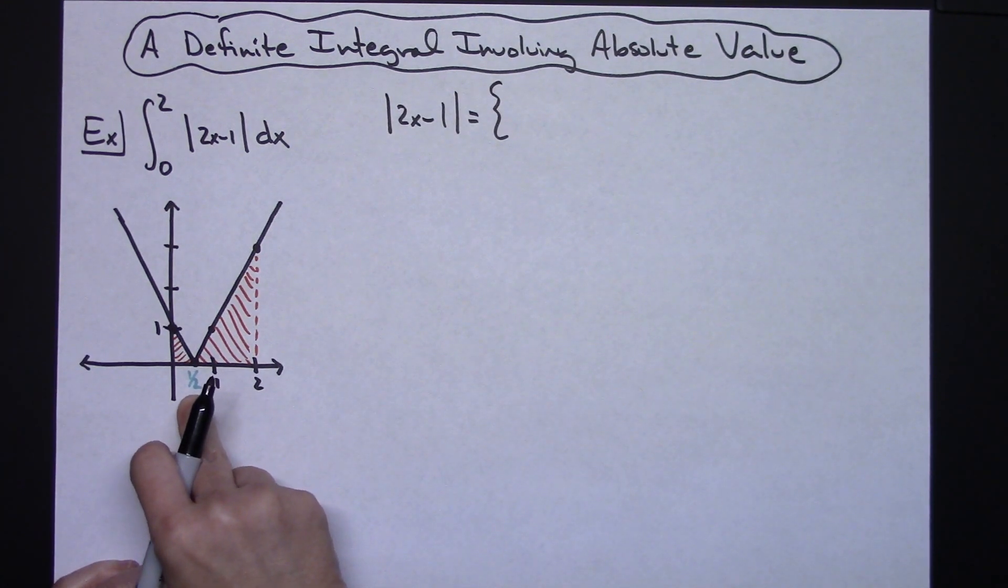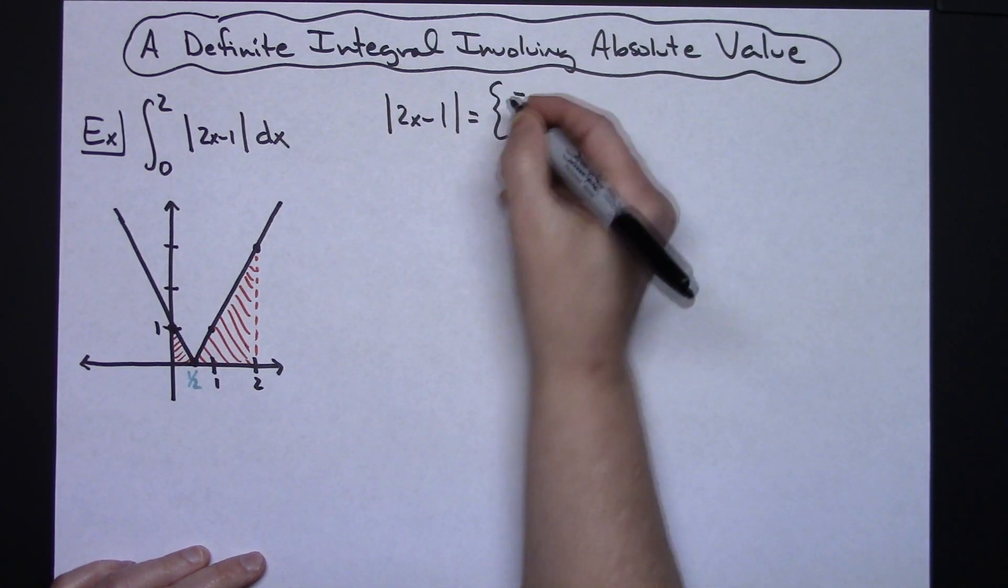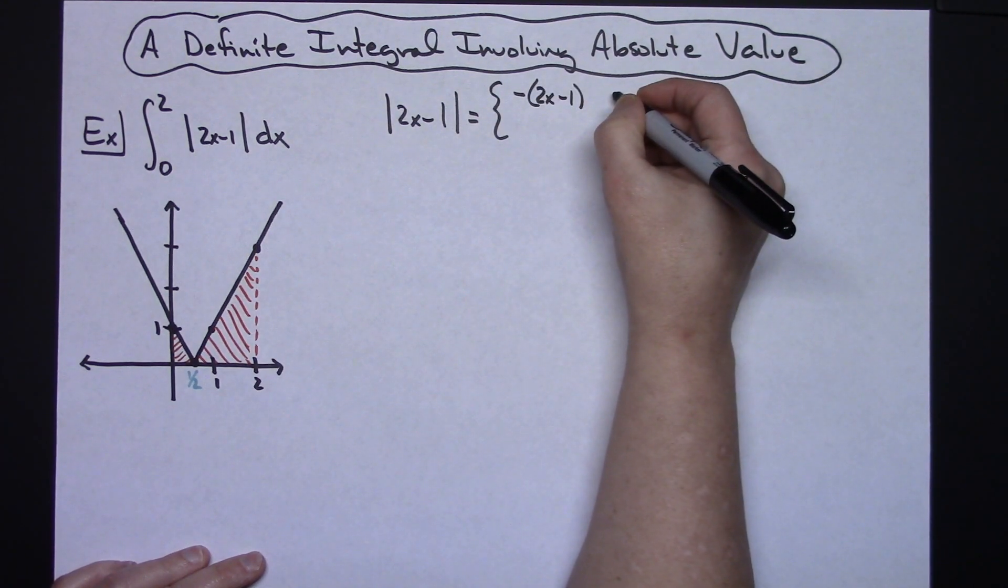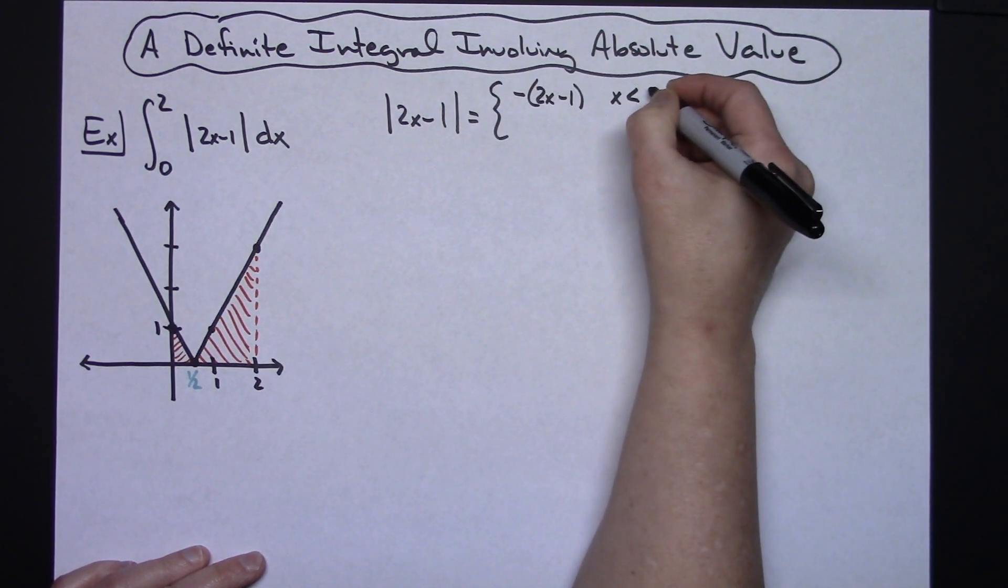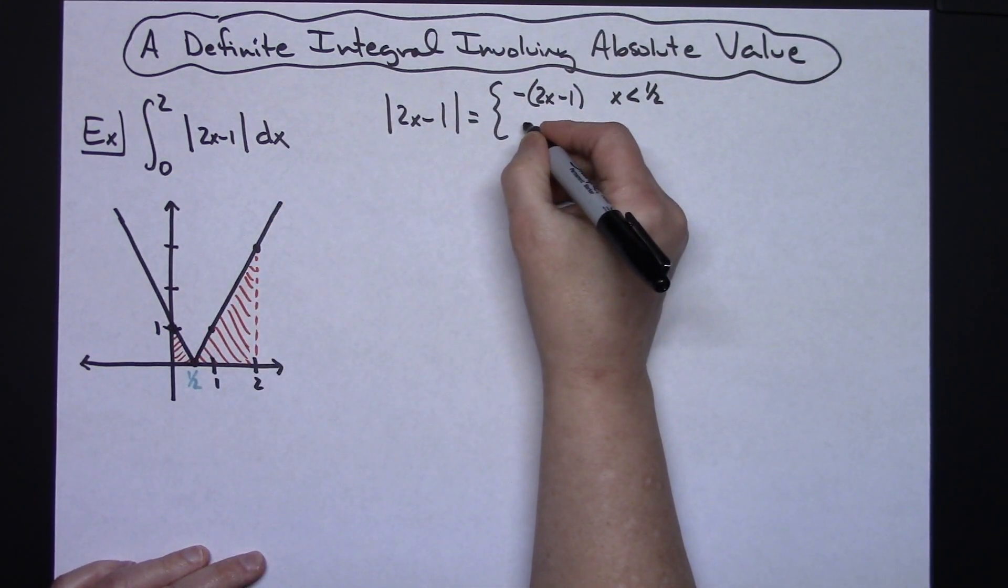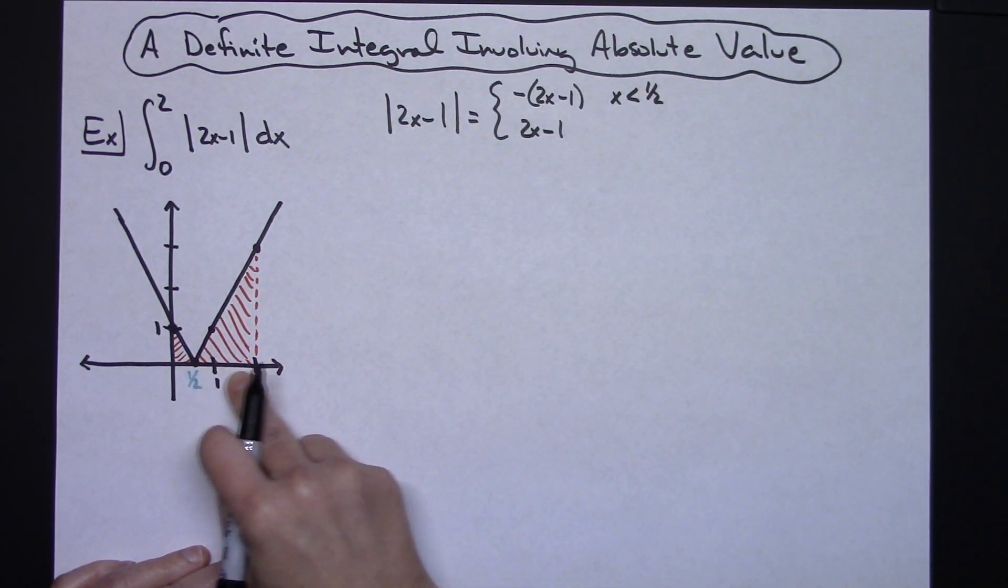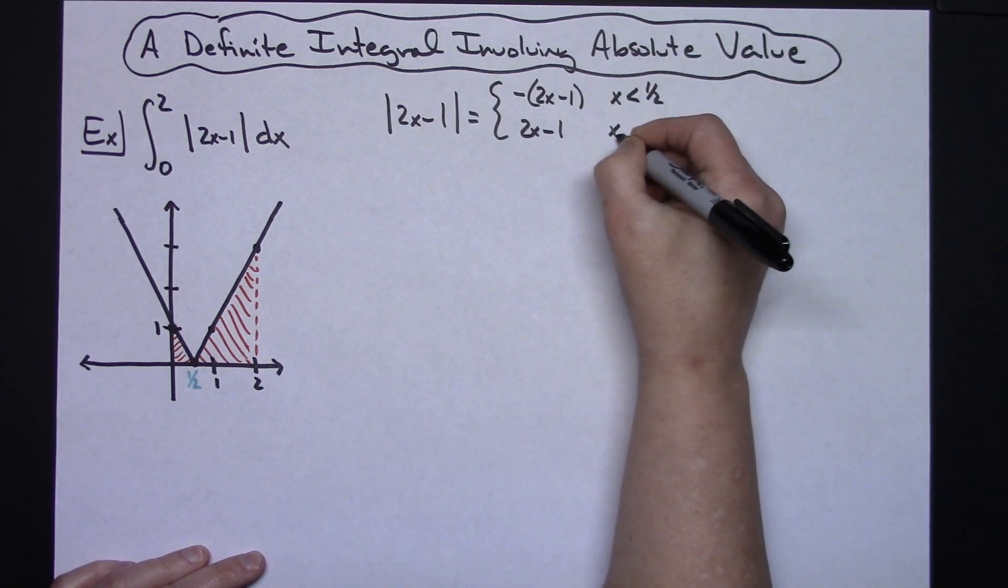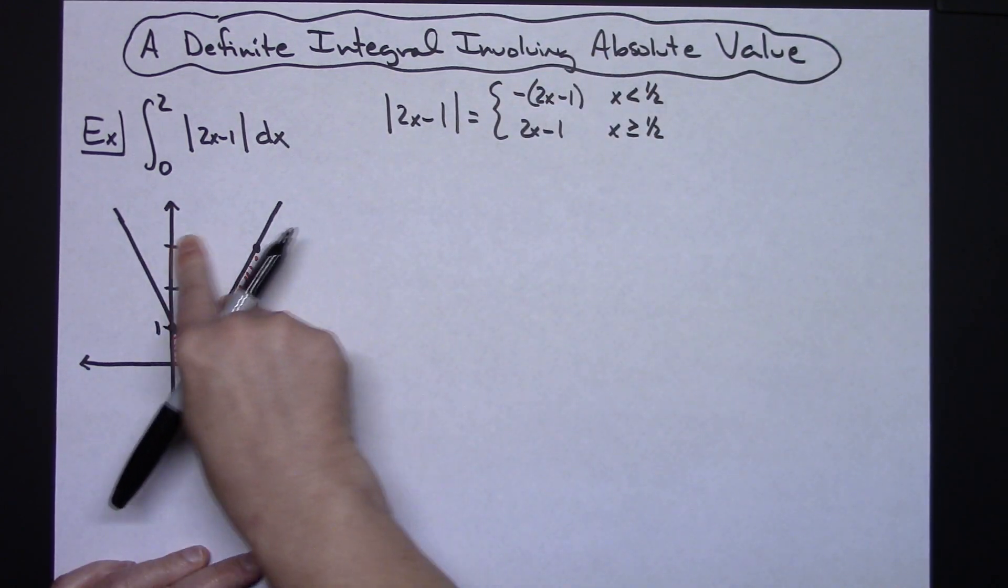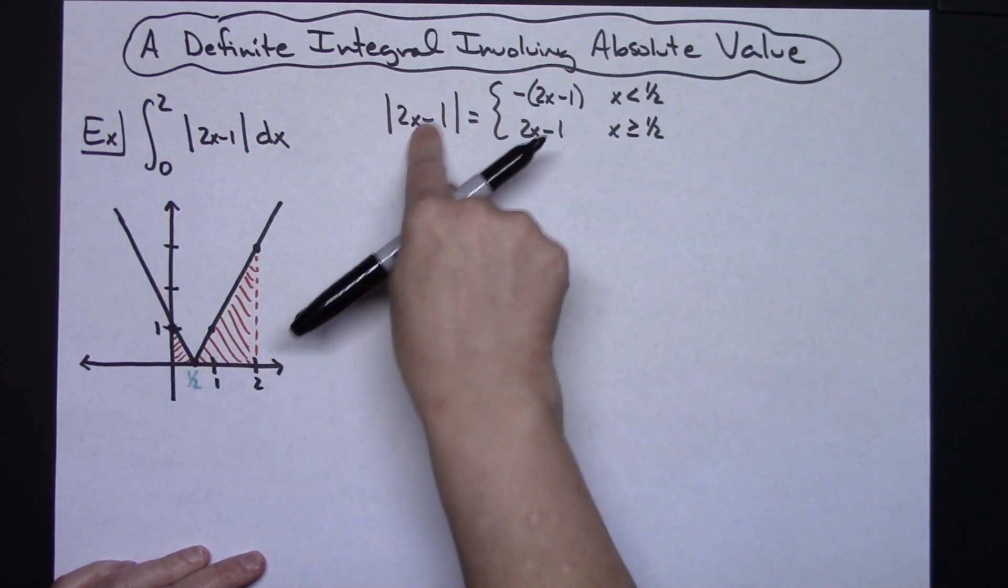The line to the left of one half is going to be negative 2x minus 1 because I've got a negative slope on there. So negative 2x minus 1 and that would be for x is less than one half. The part to the right then would be the positive 2x minus 1 and it would be for all values of x greater than or equal to one half.